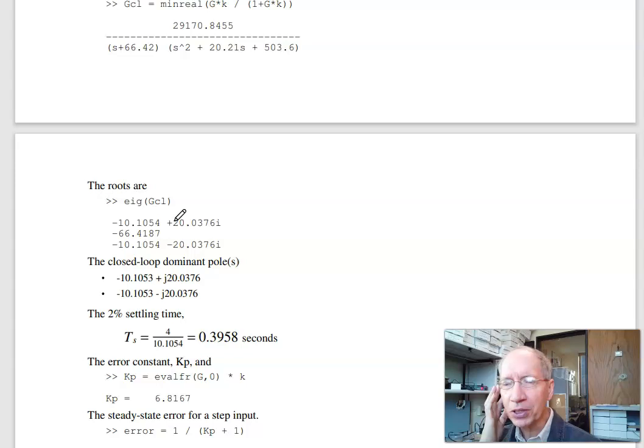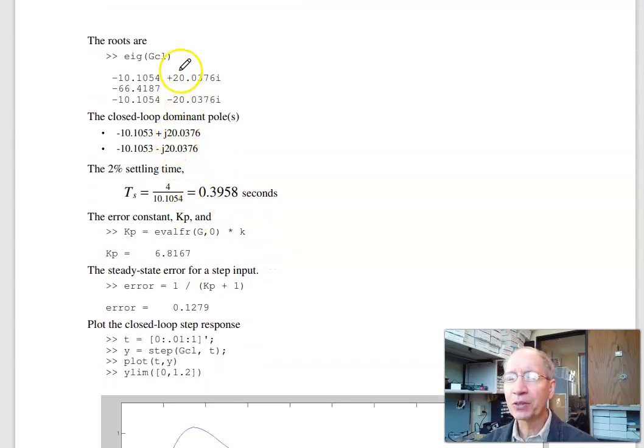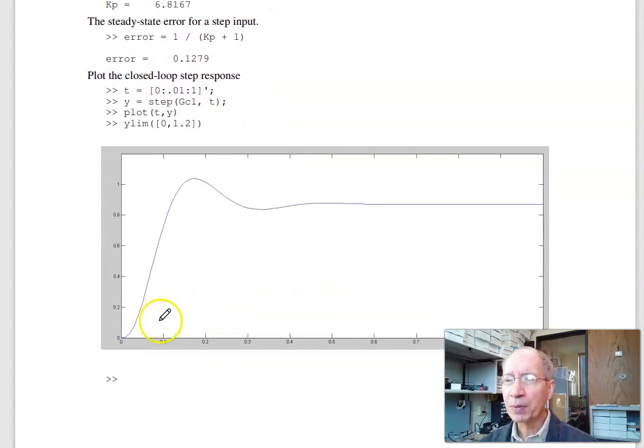The eigenvalues are almost where I placed them. I put them at minus 10 plus j20. This says, actually that's not exactly on the root locus. This is the point that's on the root locus. That tells me these are my closed loop dominant poles. The settling time is 4 over the real part. The error constant is the DC gain of G(s) times the DC gain of k(s), which is 6.8. So now I have 12% error for step input. Plotting the step response, it's quicker, less error, but in return I get a slight overshoot, 20% overshoot.